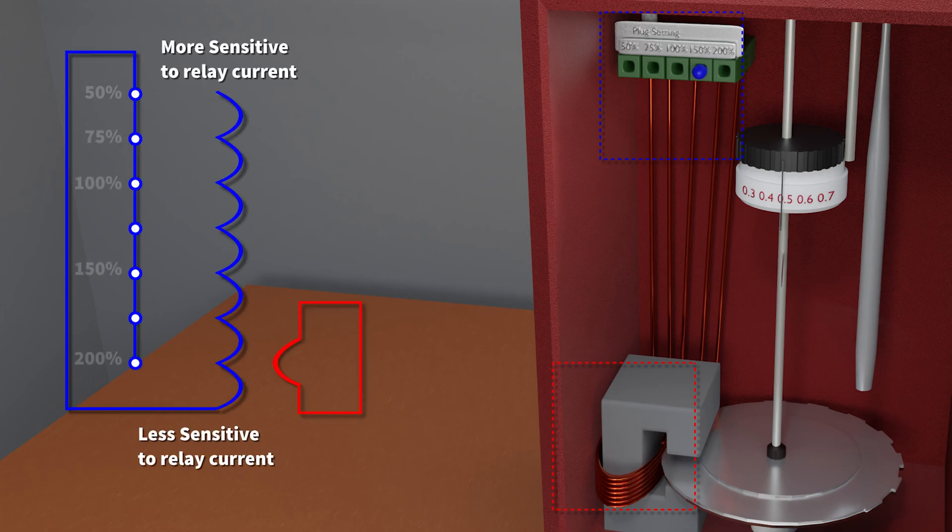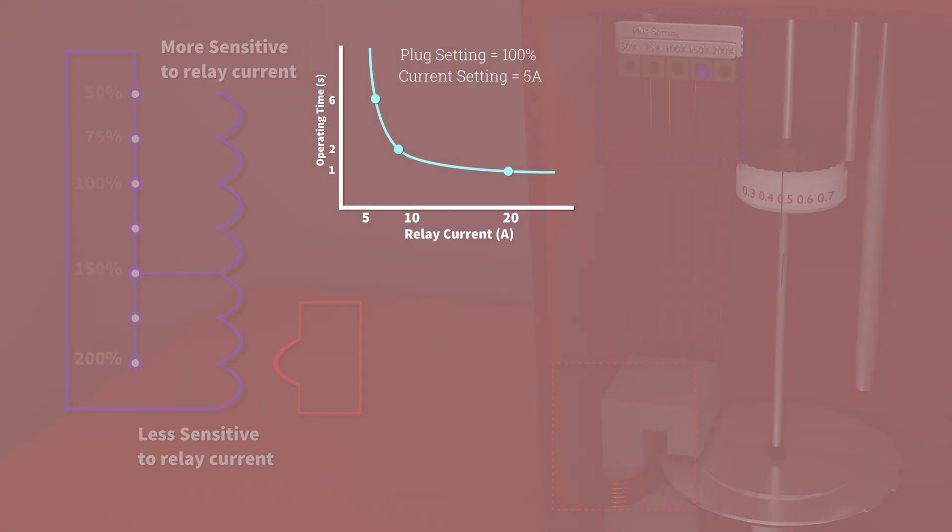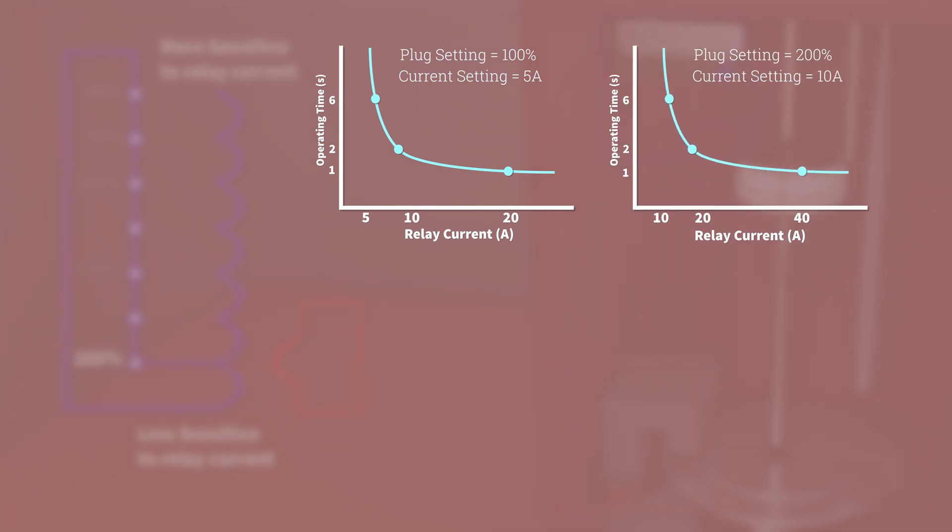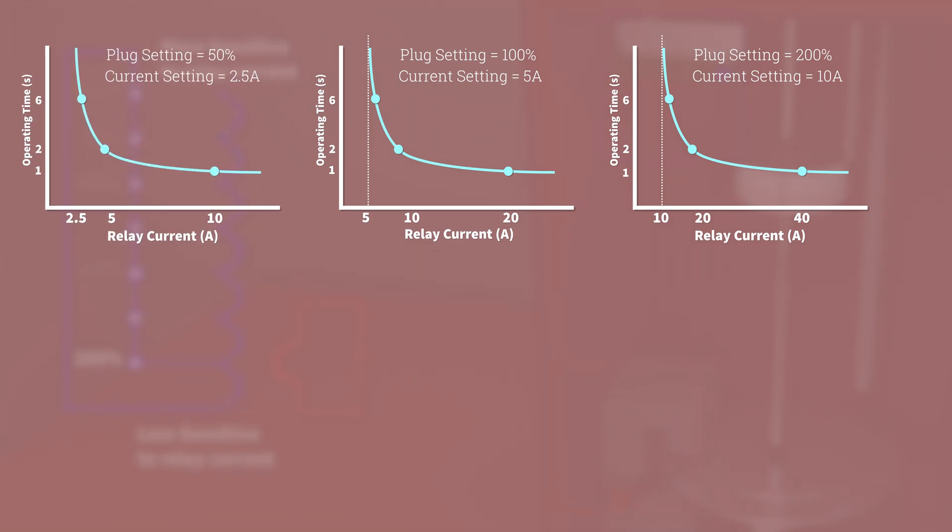The higher the plug setting the less sensitive the relay is to current. In fact the pickup current, that's the current necessary to make the disc move, is proportionate to the plug setting. So if a plug setting is 100% that's equivalent to a 5 amp current setting. 200% would mean a 10 amp current setting. So twice as much current would be needed to move the disc. Conversely a 50% plug setting requires only 2.5 amps to move the disc.